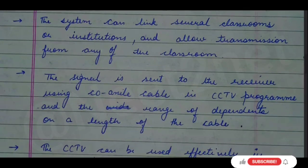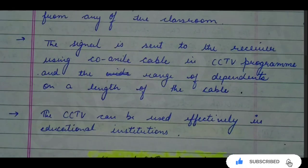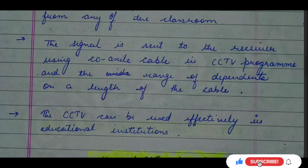The signal is sent to the receiver using a coaxial cable in a CCTV program, and the range depends on the length of the cable. In the CCTV camera, cable installation is a must — without it, it will not work. Even if you are using Wi-Fi, cable installation is also required. The range of the signal depends on the cable length.